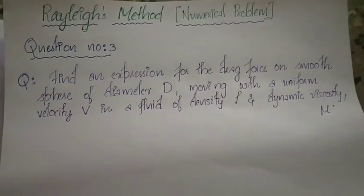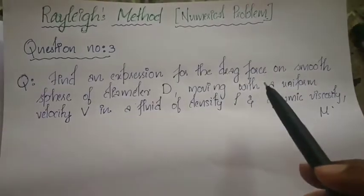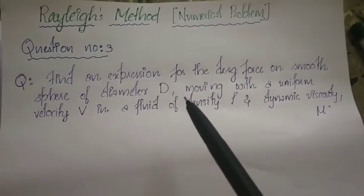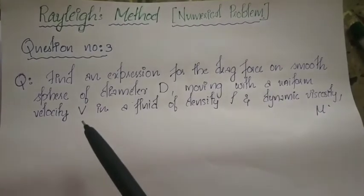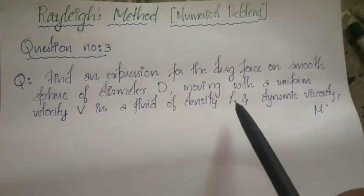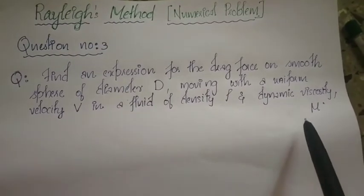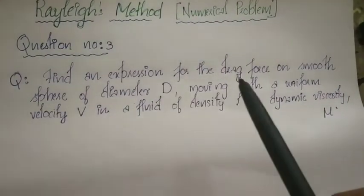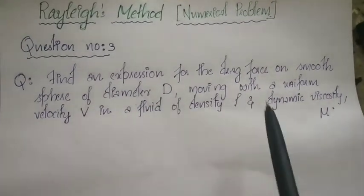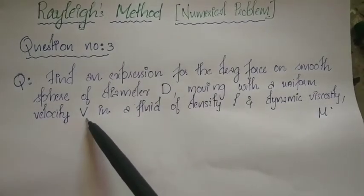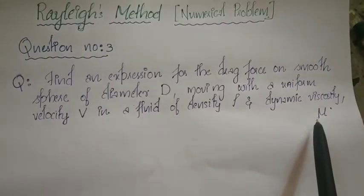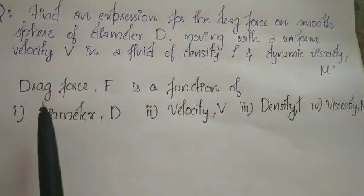The question is: find an expression for the drag force on a smooth sphere of diameter D, moving with a uniform velocity V in a fluid of density rho and dynamic viscosity mu. Drag force is a function of diameter D, velocity V, density rho, and dynamic viscosity mu.